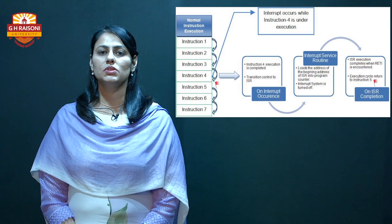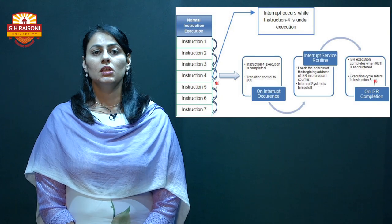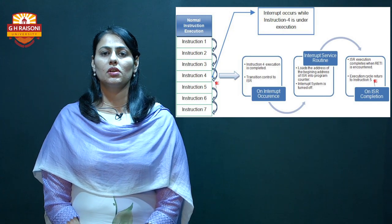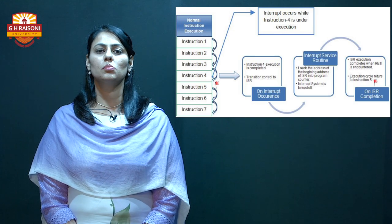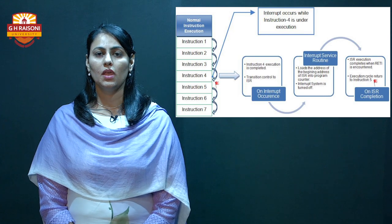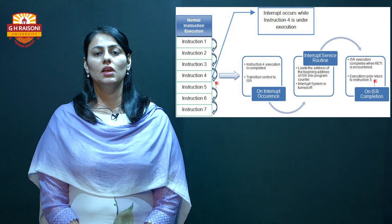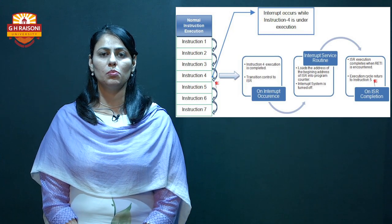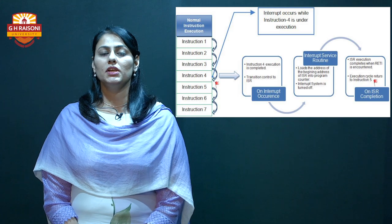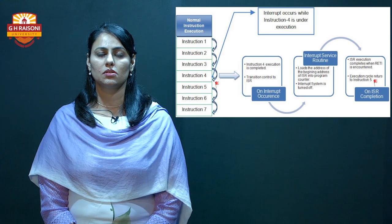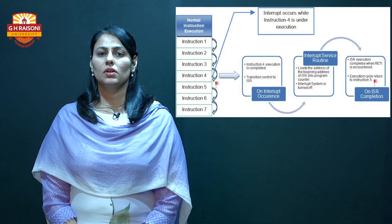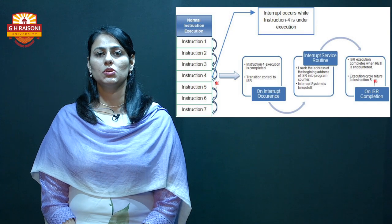The program counter register plays an important role in the whole interrupt mechanism. It saves the address of the memory from where the microcontroller left its work, and then control transfers from the main program to the ISR — the Interrupt Service Routine — which is the code executed when the interrupt signal is received. After execution of the ISR is done, control jumps back to the saved memory address in the main program. The program counter register is responsible for reconnecting the ISR back to the main program.